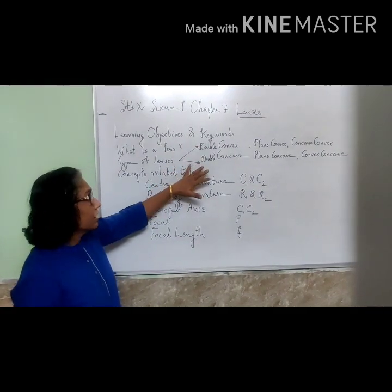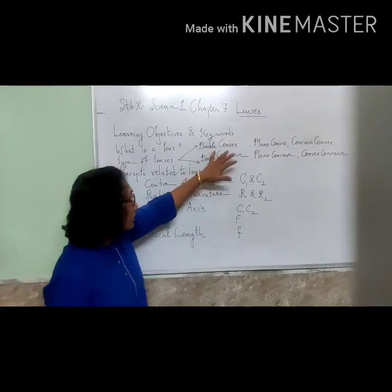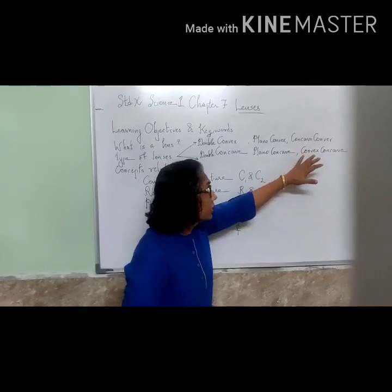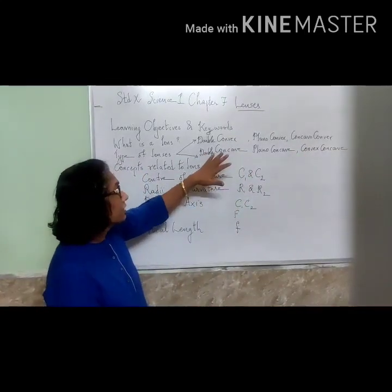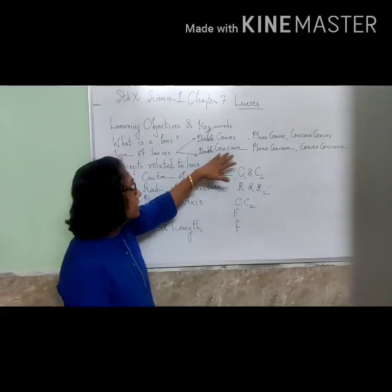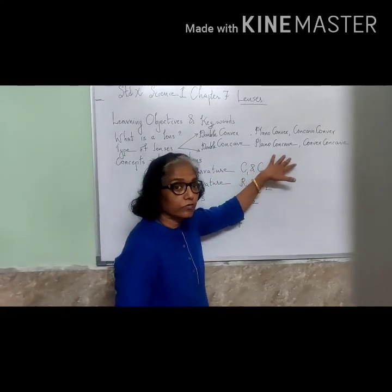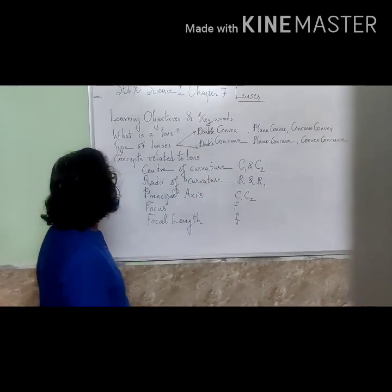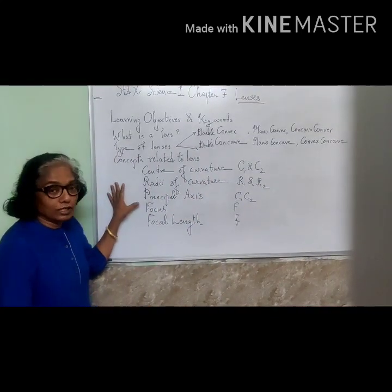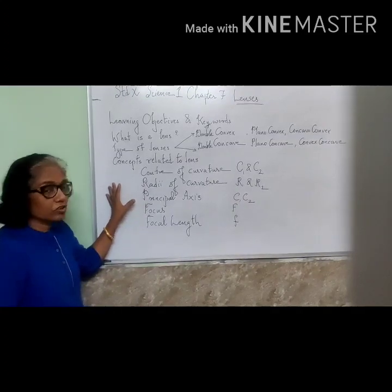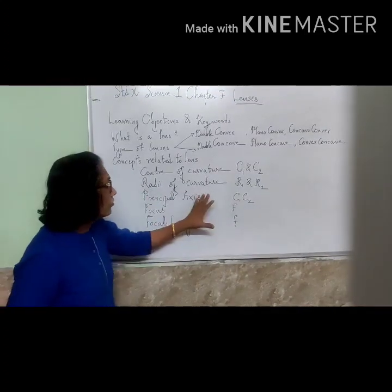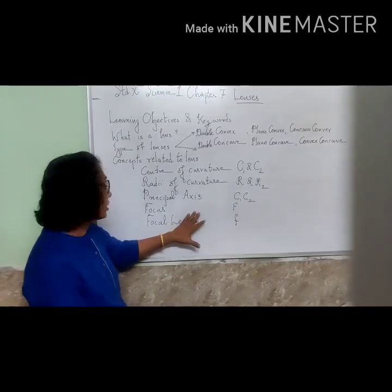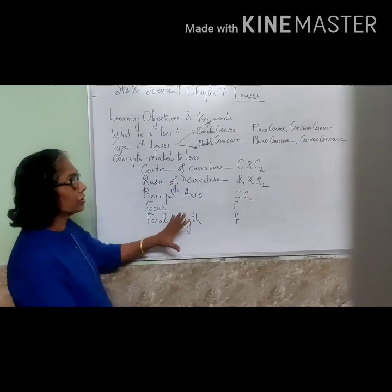First we will discuss what is a lens, what are the types of lenses. The lenses are: double convex, plano-convex, and concavo-convex for convex lens; and concave lens types are double concave, plano-concave, and convexo-concave. The concepts related to the lens include center of curvature, radius of curvature, principal axis, focus, and focal length. We will learn only this much today.